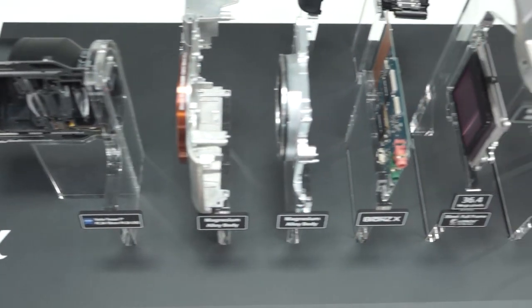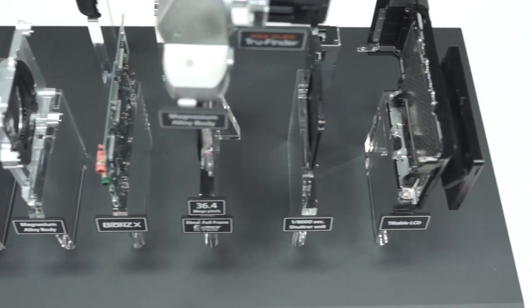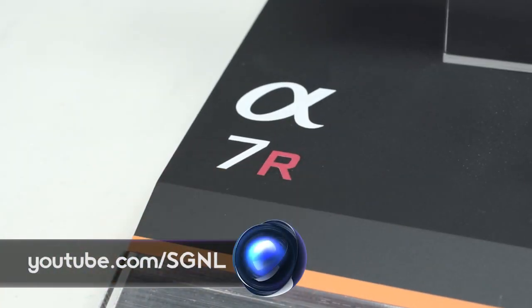And that, my friends, is what it takes to make the A7 and A7R run. You can learn more about the Alpha line or all things Sony at youtube.com slash signal.